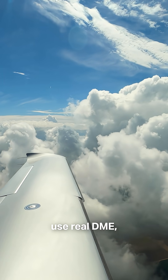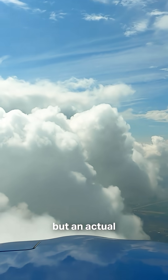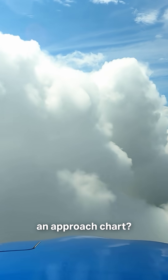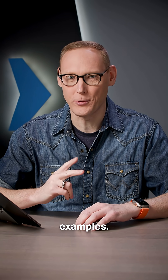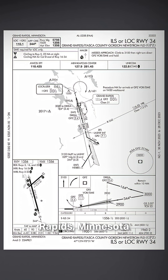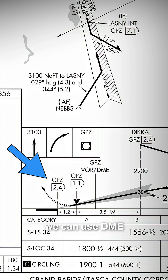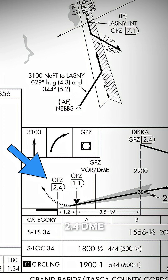When can you use real DME — not RNAV, but an actual DME system — to identify a fix on an approach chart? To get the answer, we're going to take a look at two different examples. We're going to start in Grand Rapids, Minnesota with the ILS or localizer to runway 34. If you take a look at the missed approach point for the localizer procedure, you can see that we can use DME to identify that point, and we know that because our DME distance is printed inside of the D icon — 2.4 DME from the Grand Rapids VOR DME.